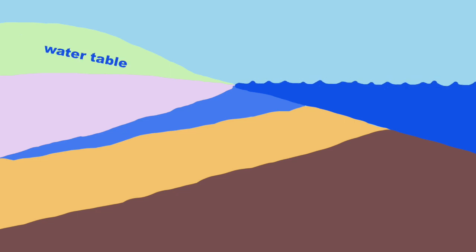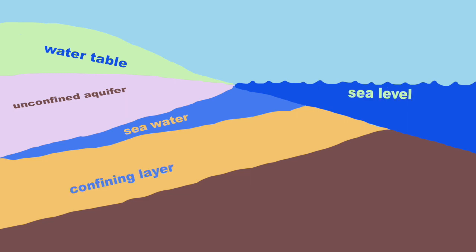Let's examine how saltwater intrusion works with this diagram. Here we have the water table, an unconfined aquifer, the seawater, sea level, a confining layer, and a confined aquifer.